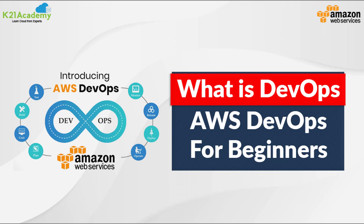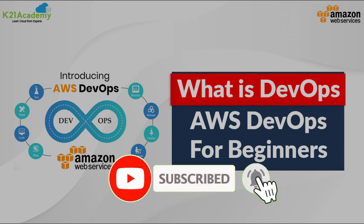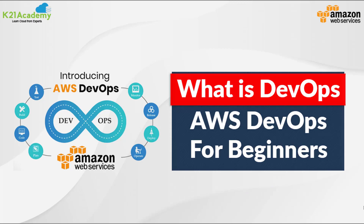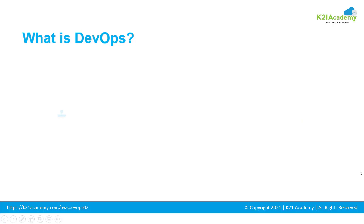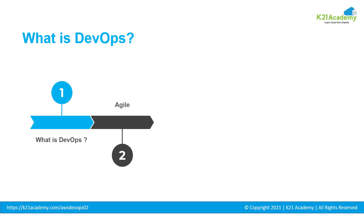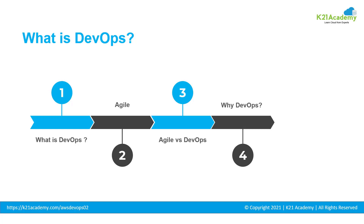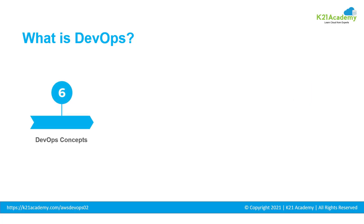Before moving on, please subscribe to our channel so you never miss an update. Let's take a quick glance at the agenda. We will first get introduced to DevOps, then understand agile practices in software development, the difference between agile and DevOps, why DevOps is important, and then the DevOps lifecycle and cycle flow.